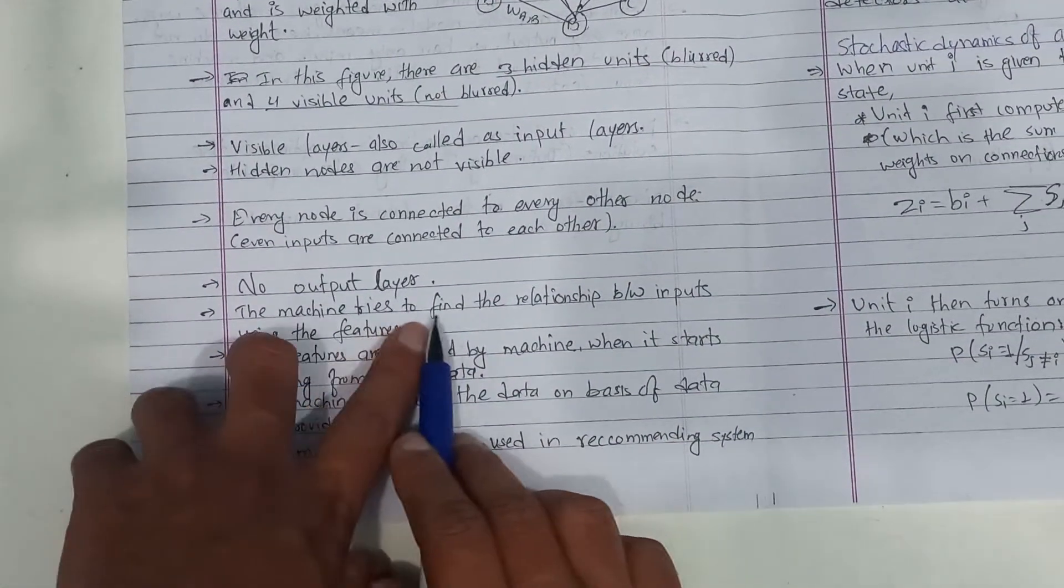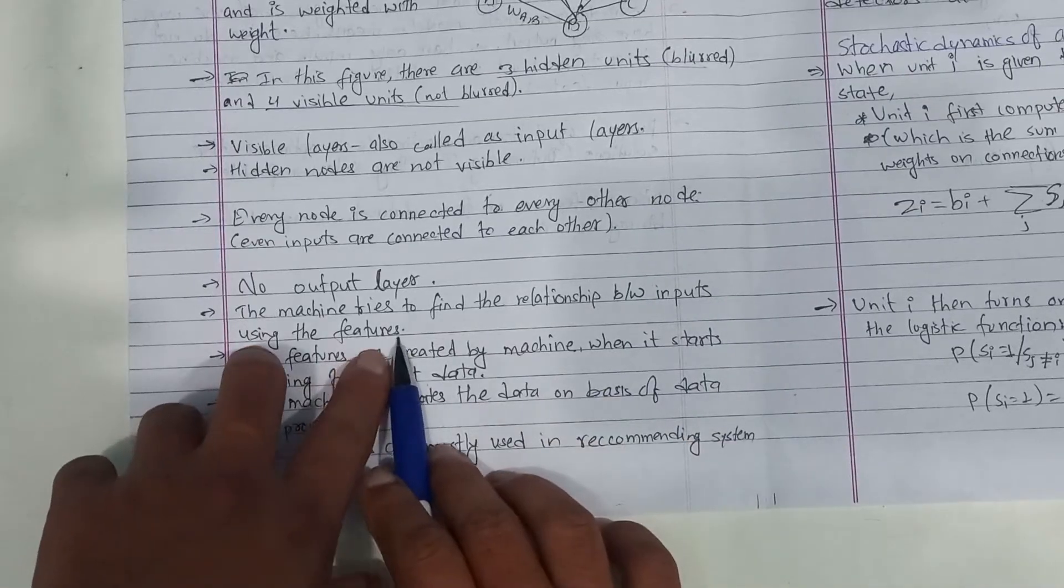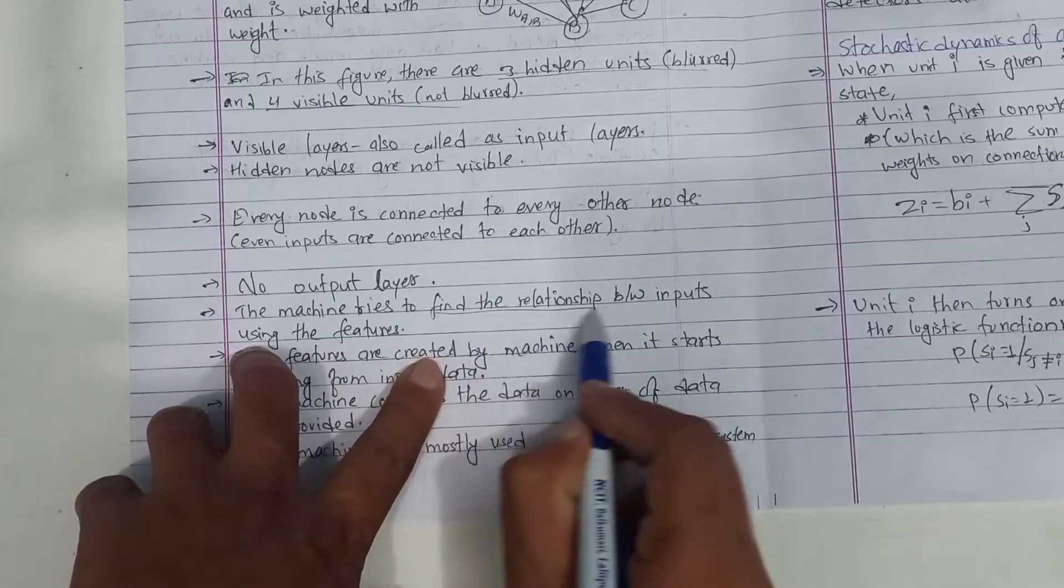This is one connection and this is one connection, so no output layer. The machine tries to find the relationship between inputs using the features.